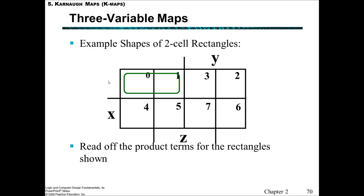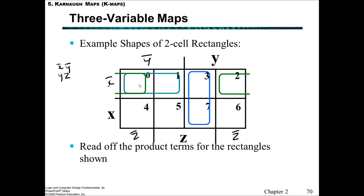Here are some shapes of two-cell rectangles. In one example, Z is changing, but X and Y stay the same — giving not-Y and not-X. In another, X is changing while Z and Y stay the same — so this is where Z is true and Y is true. Another example: the cell on the far right and the cell on the far left are actually adjacent, as if you could wrap it around. So minterms 0 and 2 are adjacent; Y is changing, Z is not changing, and X is not changing.